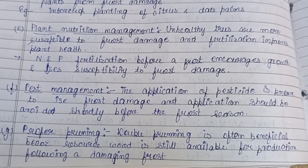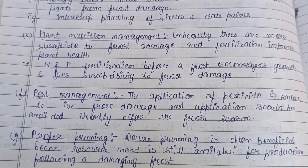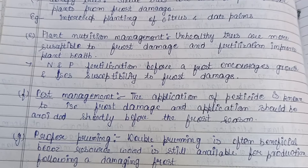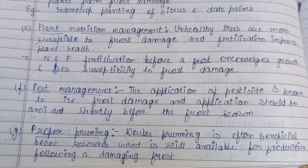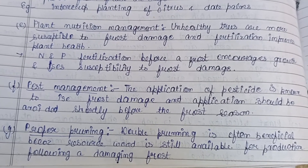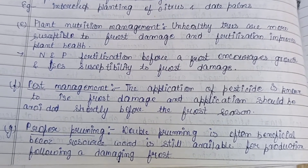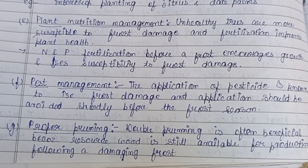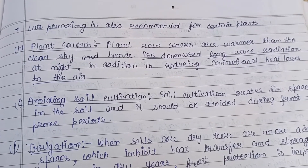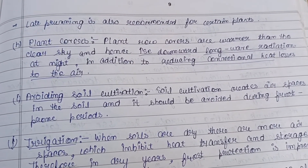For pest management, application of pesticides is known to increase frost damage, so pesticide application should be avoided shortly before the frost season. Regarding proper pruning, double pruning is often beneficial because reserve wood is still available for production following damage. Late pruning is also recommended for certain plants.